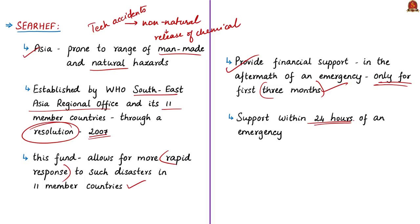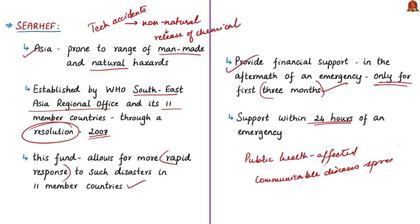Disasters are dangerous for public health — causing loss of life, injuries, disabilities, psychosocial problems, and other health impacts. They also provide fertile ground for communicable diseases and epidemics, meaning rapid response is critical to prevent heavy casualties. These are the reasons WHO focuses heavily on disaster management, disaster risk reduction, and preparedness.